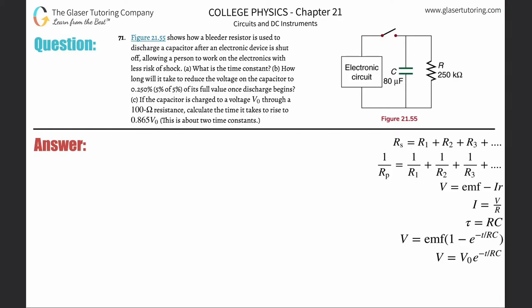Number 71, figure 21.55 shows how a bleeder resistor is used to discharge a capacitor after an electronic device is shut off, allowing a person to work on electronics with less risk of shock.